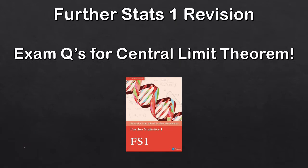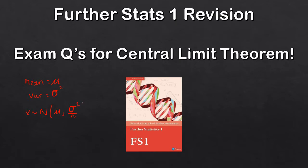One of the key points of the Central Limit Theorem is that if we have a random sample of size n from any distribution, and our mean is mu and our variance is sigma squared, then the sample mean is normally distributed — or approximately normally distributed — with mean mu and variance sigma squared divided by n.